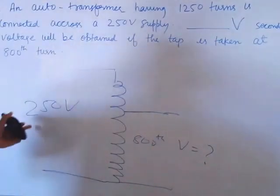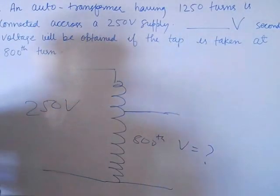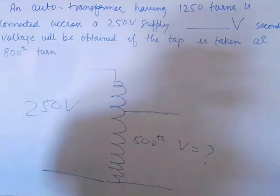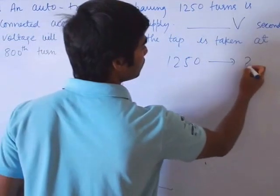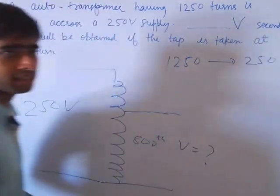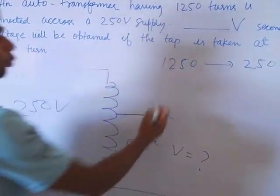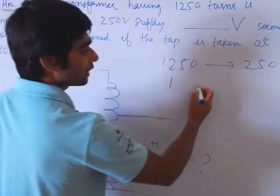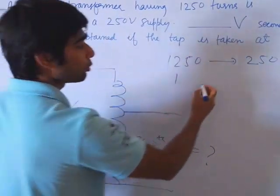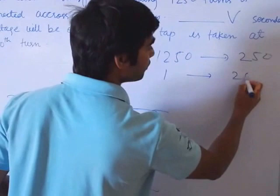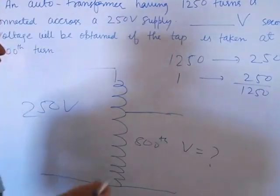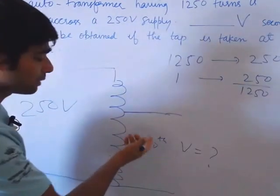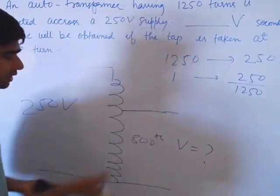Let's see, 1250 turn is contributing to 250 volt. So 1250 turn is contributing to 250 divided by 1250. For 800 turn, we have to get out how much secondary voltage - 800 turn.